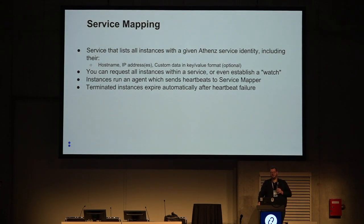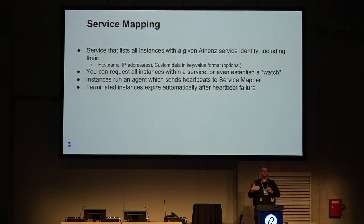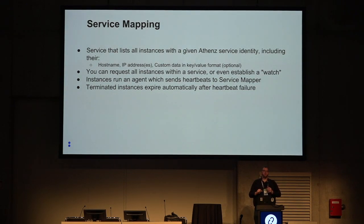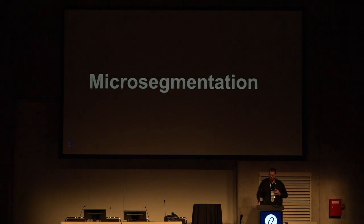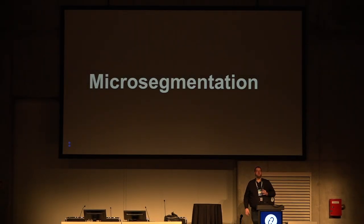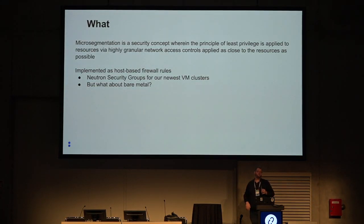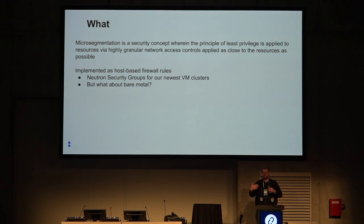You can establish something we call a 'watch.' You can call Service Mapper and say, 'Give me a list of all instances with this Athens service identity,' or you can establish a watch — it's sort of like a message queue. Every time a new instance appears you get a message; every time an instance goes away you get a message, and you can update accordingly. This is relevant to zero trust micro-segmentation. Micro-segmentation is applying the principle of least privilege to all resources on your network.